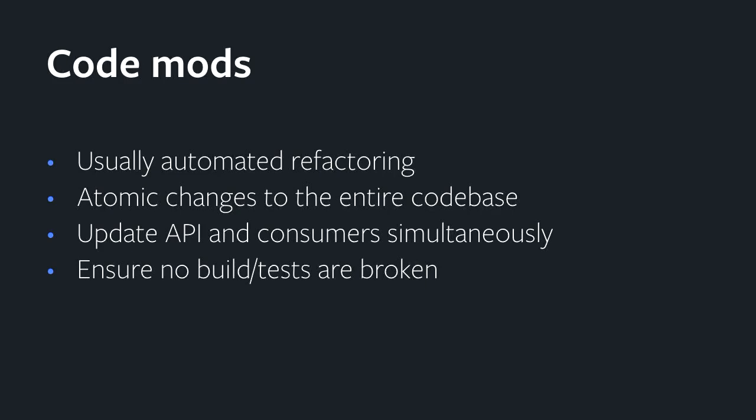The kind of thing we tend to do at Facebook we call code mods, where it's an automated refactoring. We have essentially a monolithic repository for most of our stuff at Facebook, which means all of our projects are in one repo. This means that if you were to change an API and somebody is depending on that, you would immediately break their builds or tests. So you have to make sure you're updating all of these references, and doing this in an automated way allows you to make these changes without breaking any tests or builds.